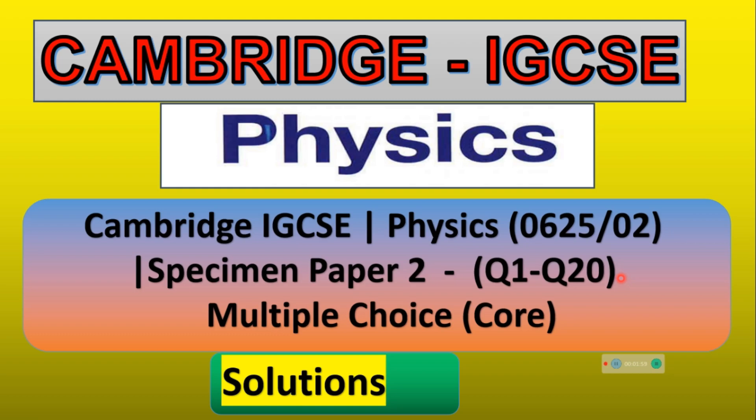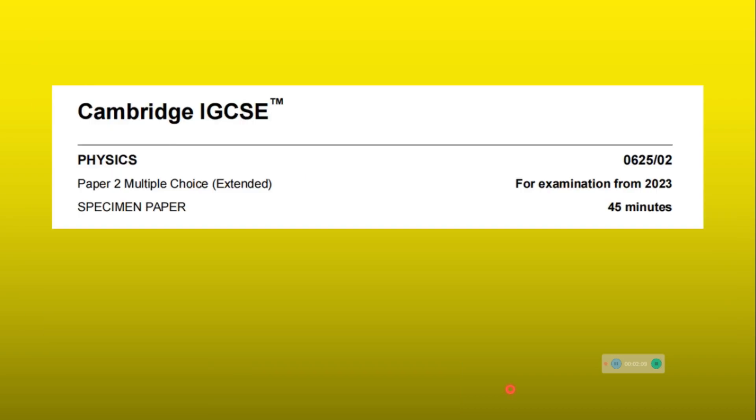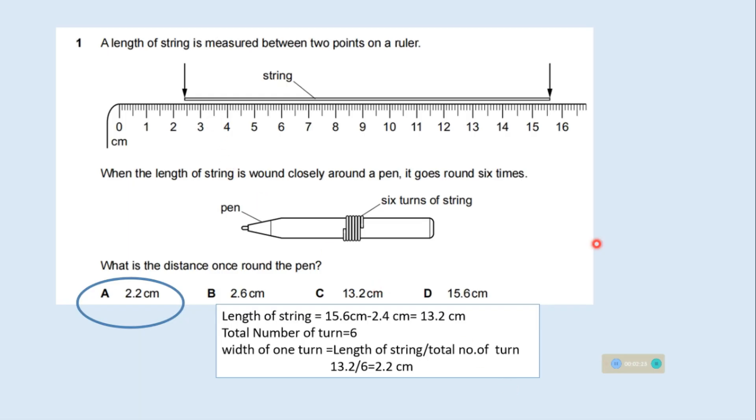Hello students, in this video we will solve a physics specimen paper 2. This is for Cambridge IGCSE paper code 062502. This question has been solved in paper 1 also and there was some typing error, so I have solved this question again in this video and this is a part of paper 2 also.